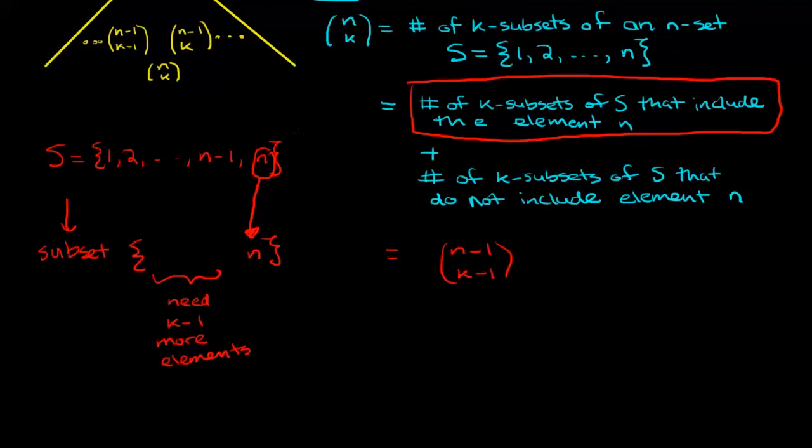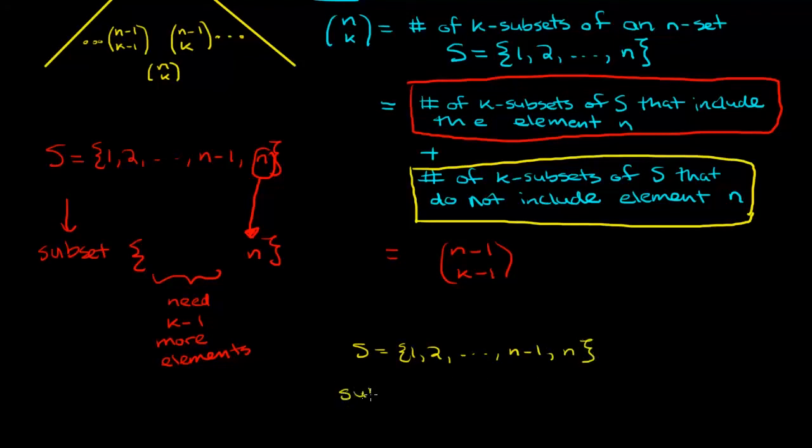Next, let's think about how to calculate the number of k subsets of S that do not include the element n. Here, I'm going to write down the set S again. Now, when we're selecting a k subset, we know we're going to need k elements. However, when we look back at S, we're not allowed to use the element n. That means we need to select k elements from a set of only n minus one things. So that is n minus one choose k. And that completes our proof.